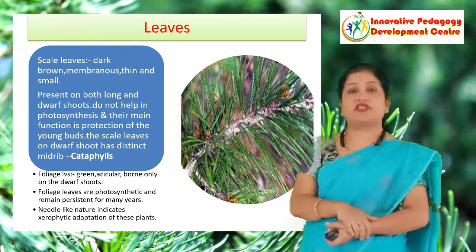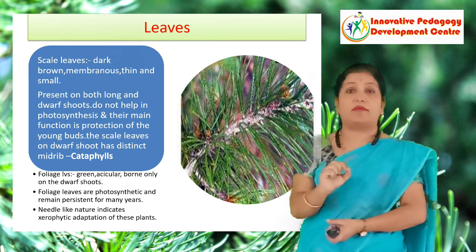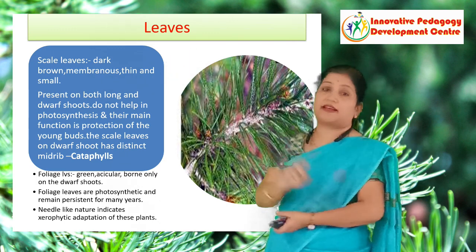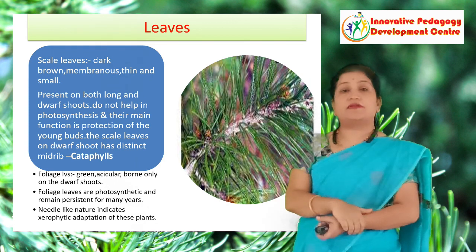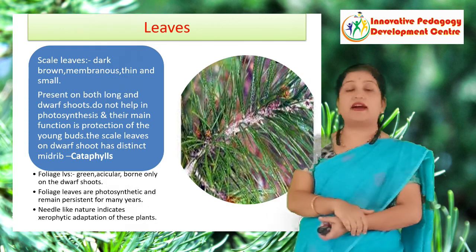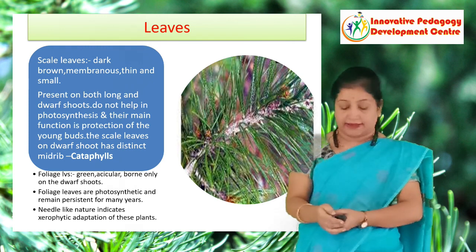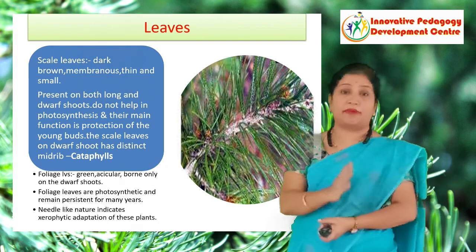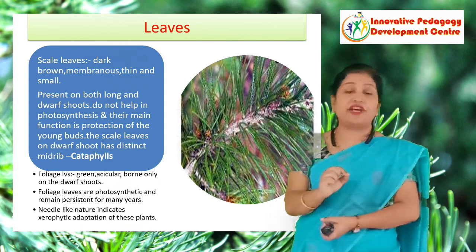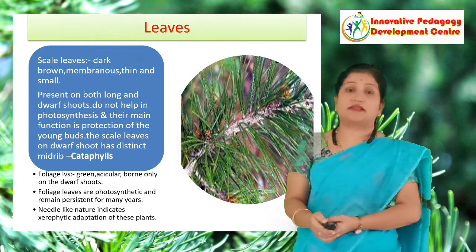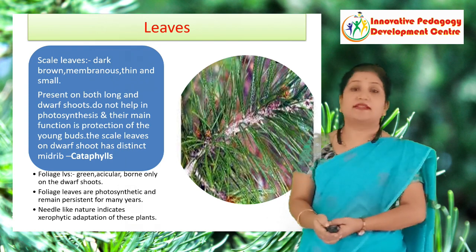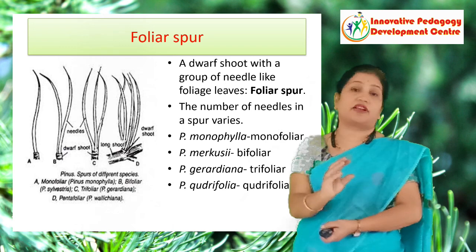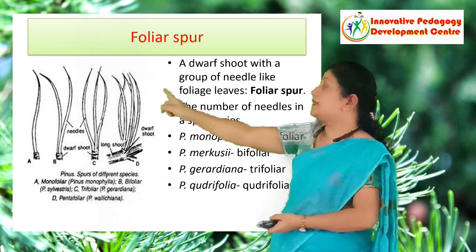Then there are foliage leaves which are acicular — the technical term used to denote the needle shape. In the picture you can see the needle-shaped foliage leaves. These leaves are persistent; they last for many years and are the site for photosynthesis. As these plants are well suited to the temperate xerophytic habitat, such leaves are an adaptation to survive in stress conditions. These needles are developed in a special pouch-like structure known as a spur.